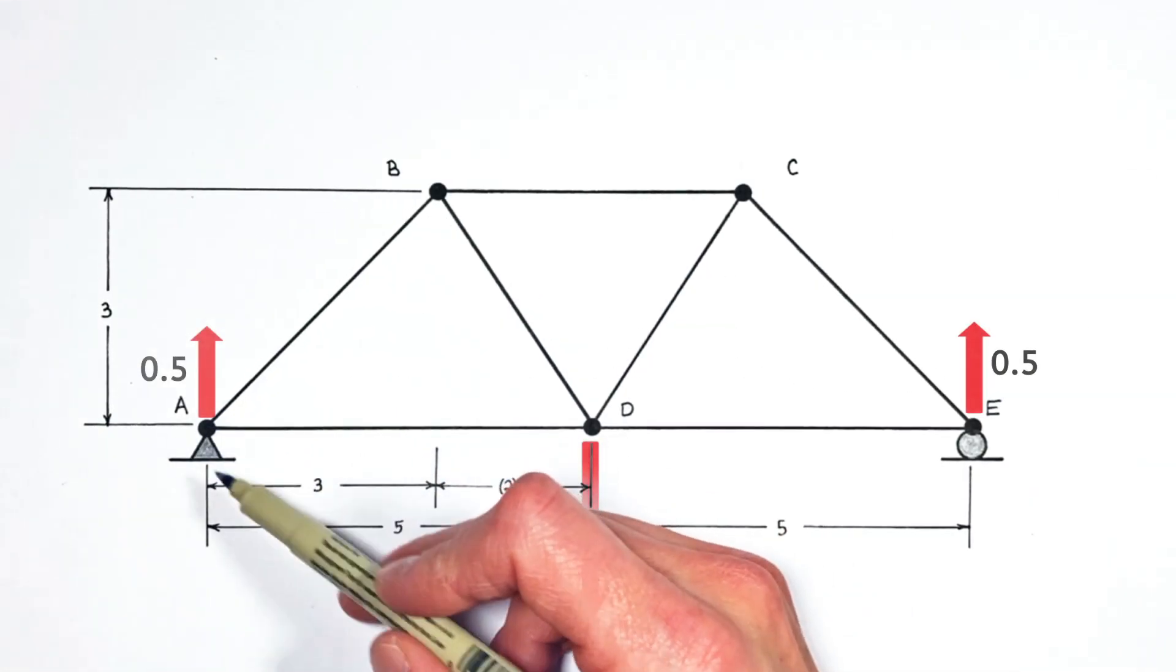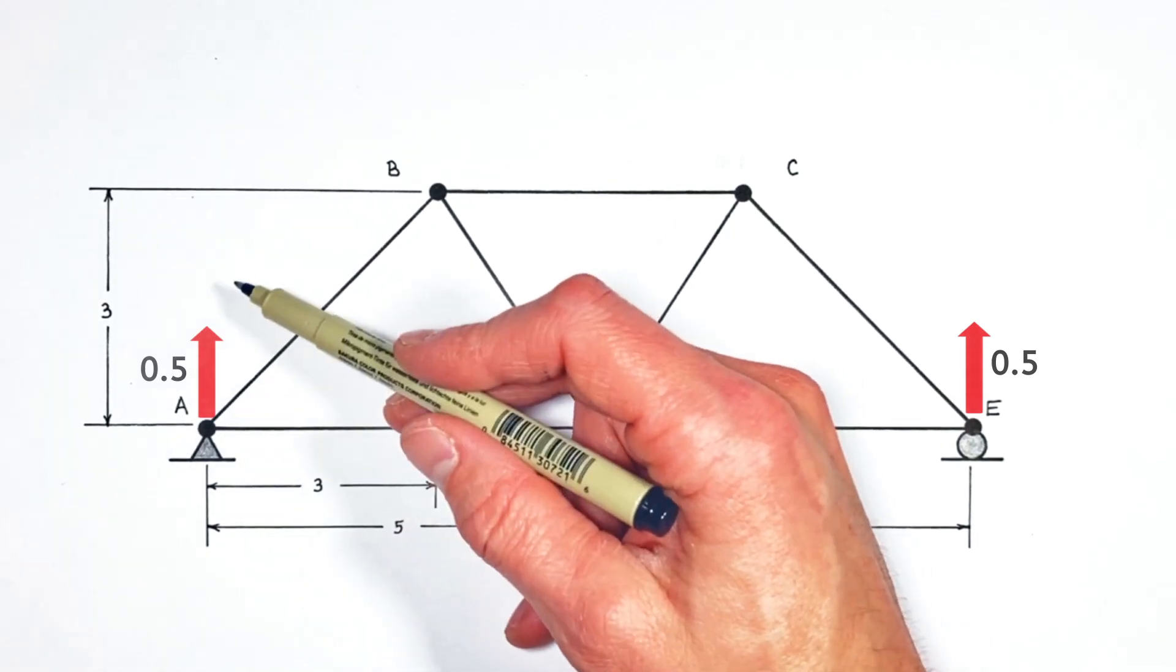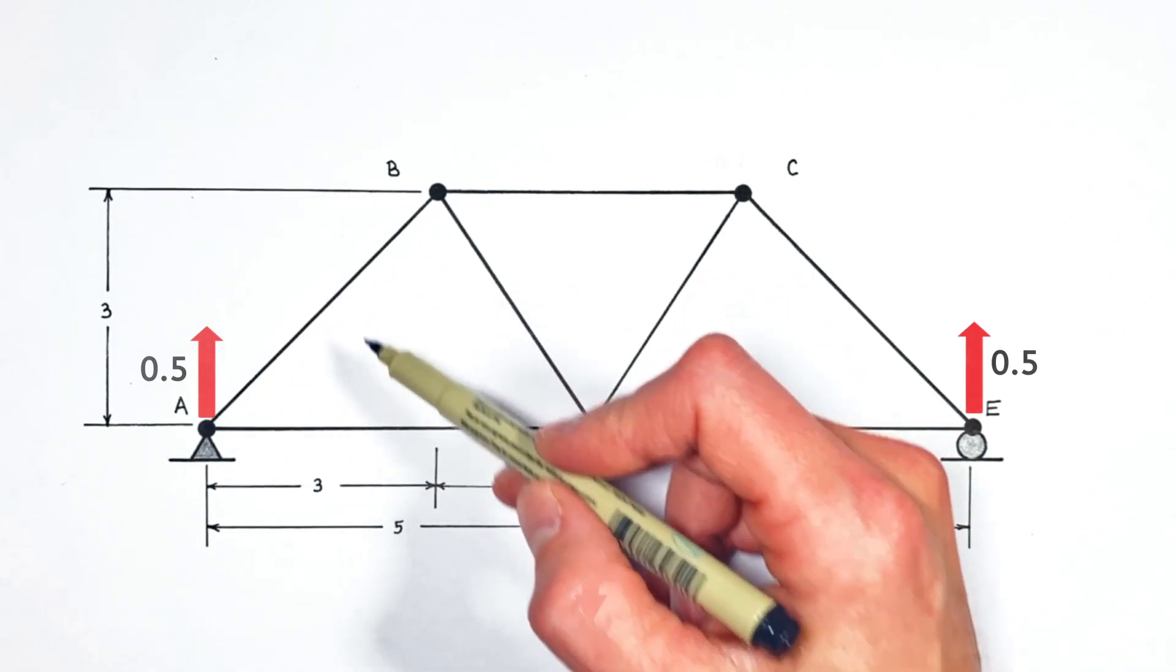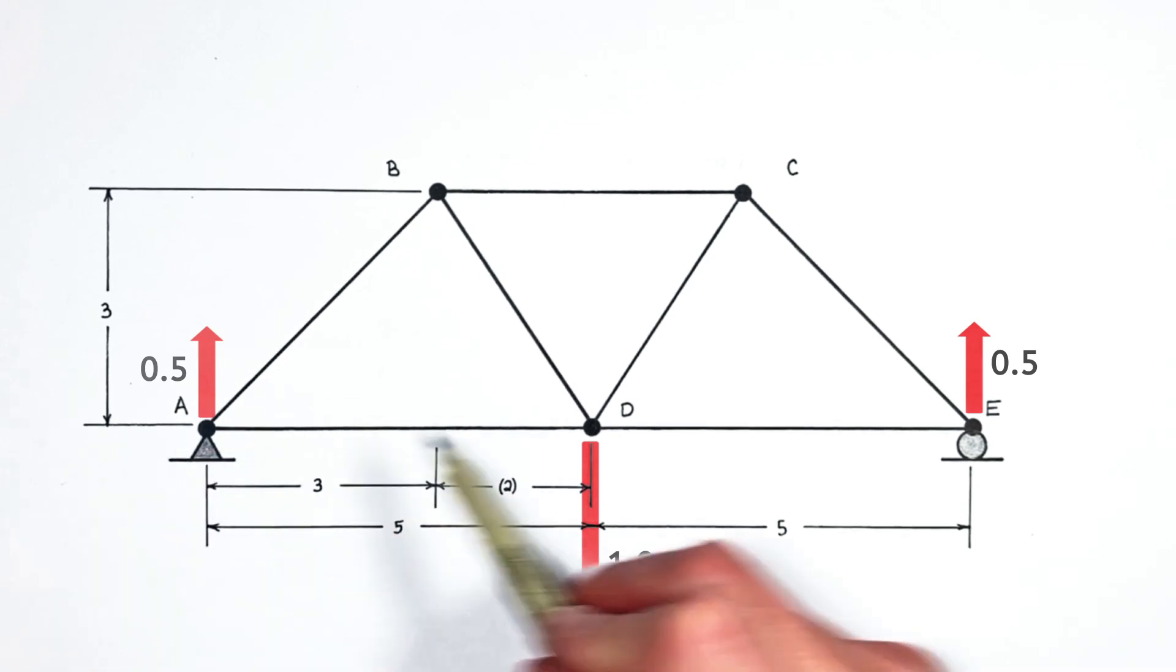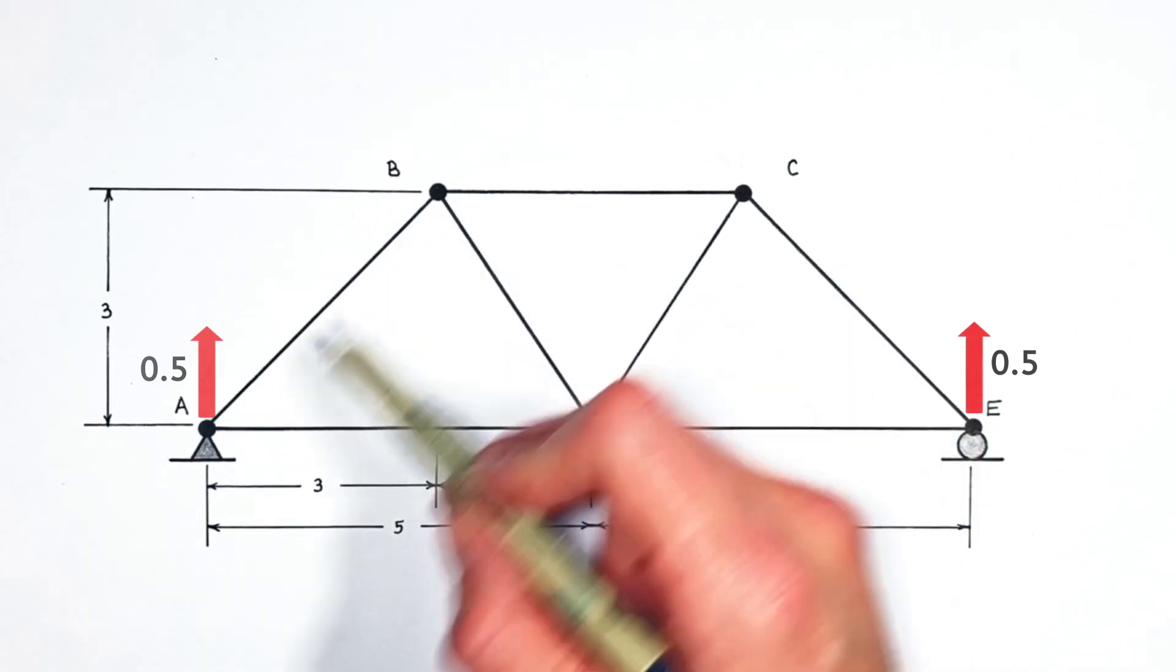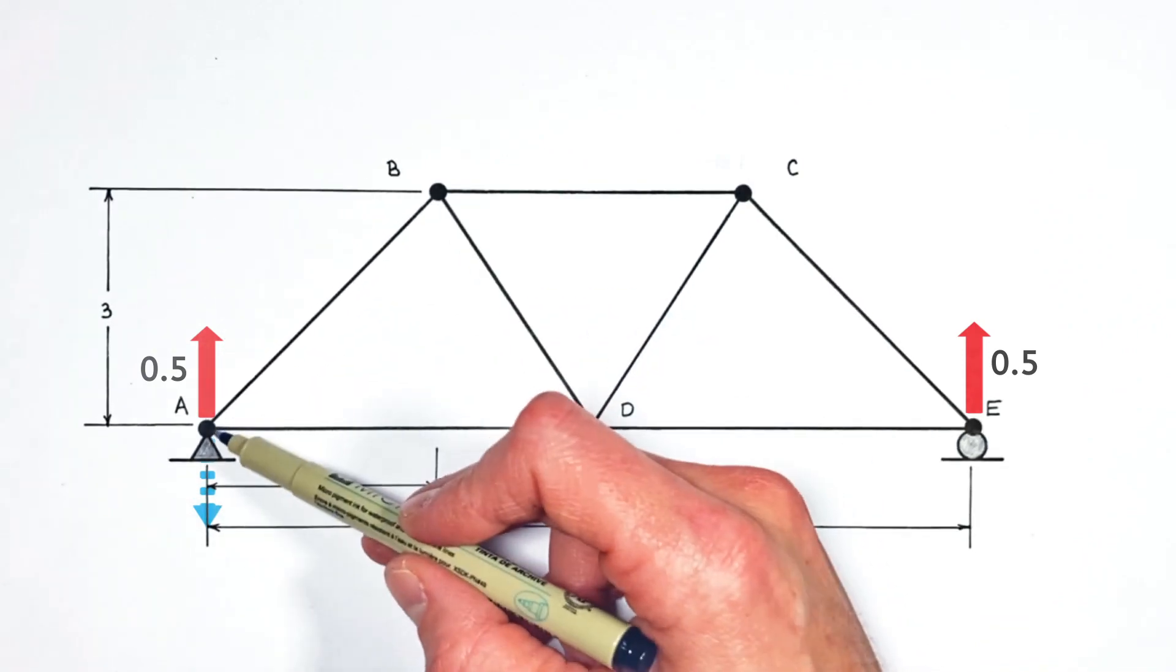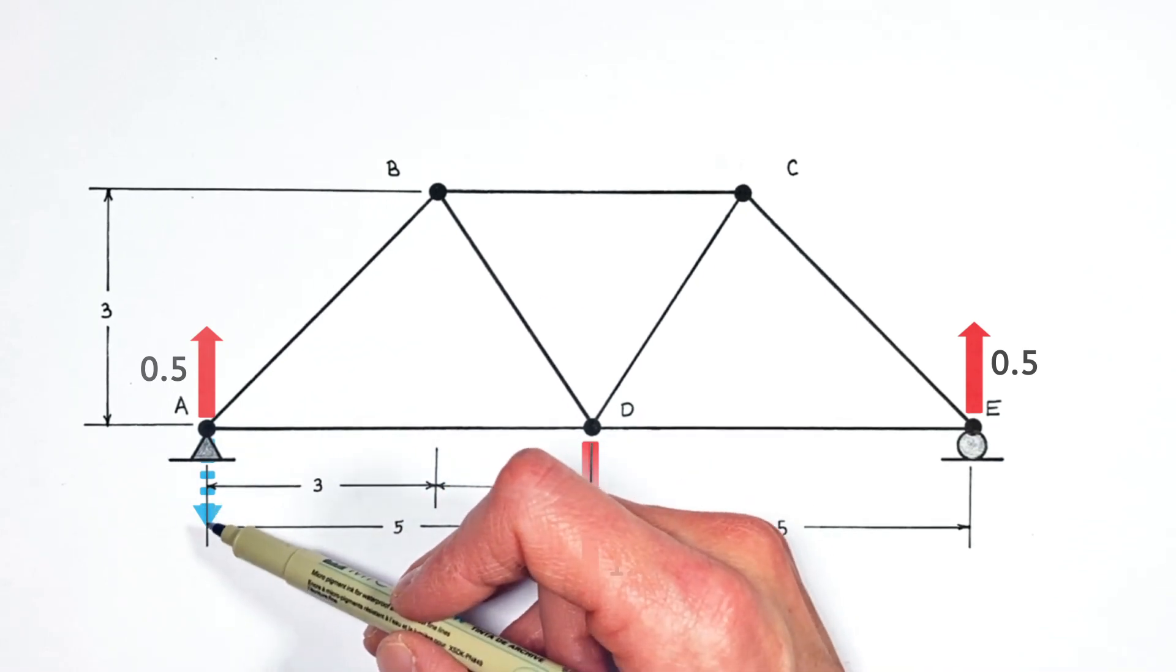So keeping those two rules in mind, let's look at what's going on here at joint A. We know the force by this pin is pushing up with a force that's half the load. So load being one, we get an upward force by the support of 0.5. Now because a beam can only act along its axis or in the direction of the beam, that means this beam running from A to D cannot act vertically on this joint, which really means that this beam AB has to be pushing down on joint A just as hard as the pin support is pushing up.